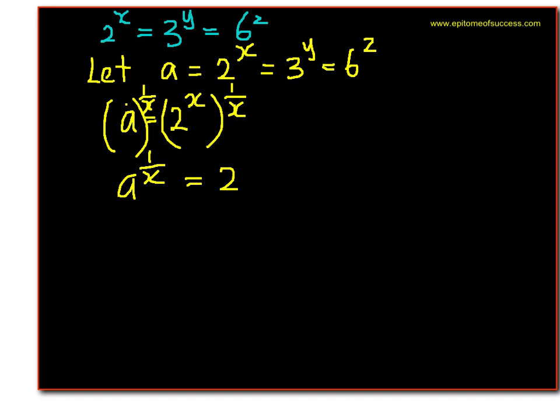Then we do the same thing. We do the same thing here. 3 to the power of y equals a, so 3 equals a to the power of 1 over y, because basically we multiply 1 over y on both sides - their power. Then 6 to the power of z equals a as well. So then 6 equals a to the power of 1 over z.